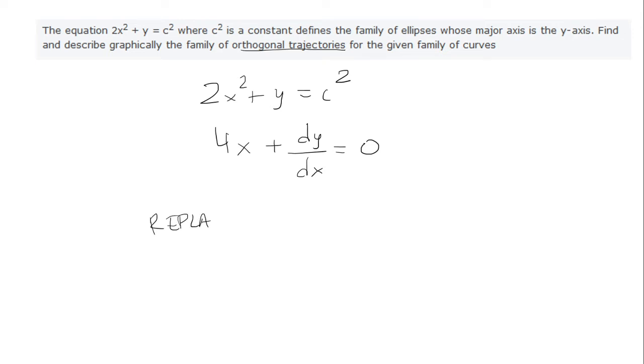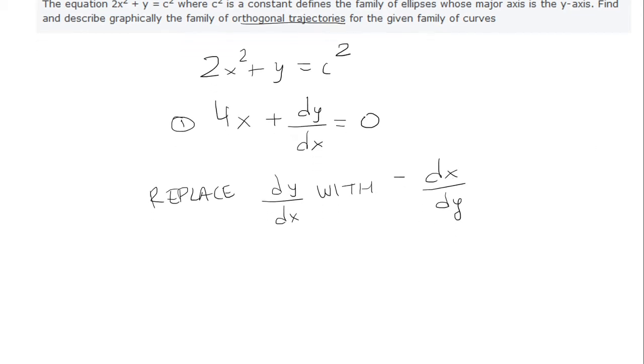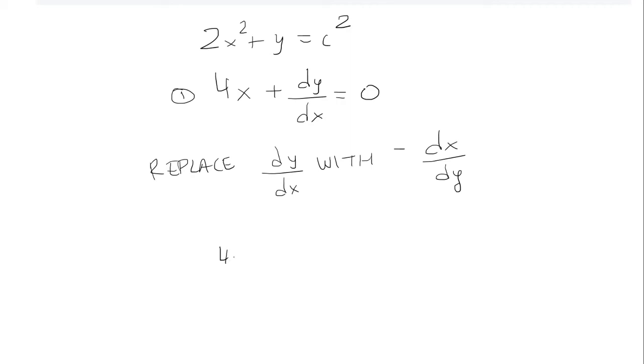Now we're going to replace dy/dx with negative dx/dy. So we have 4x minus dx/dy equals 0.